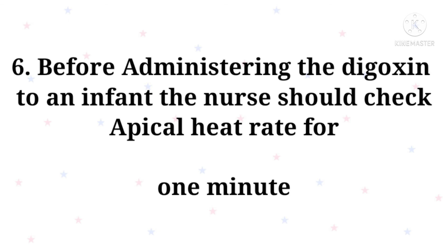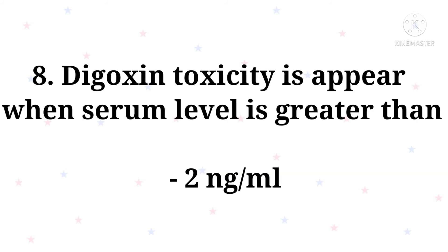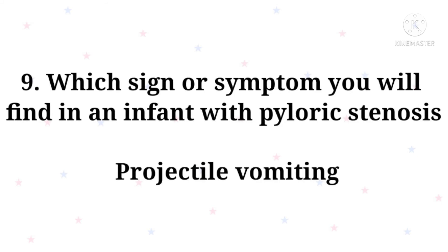Before administering digoxin to an infant, the nurse should check the apical heart rate for one minute. Which of the following congenital heart defects is classified as cyanotic? Tetralogy of Fallot. Digoxin toxicity appears when serum level is greater than 2 mg per mL. Which sign or symptom will you find in an infant with pyloric stenosis? Projectile vomiting.